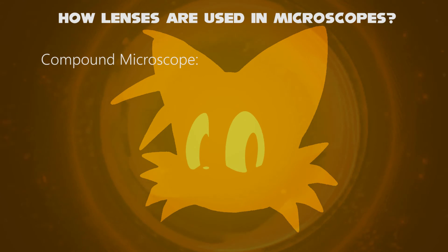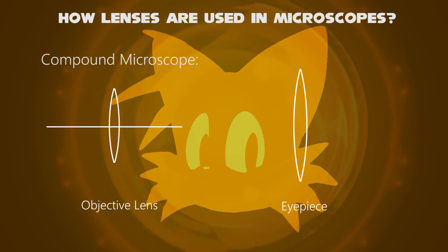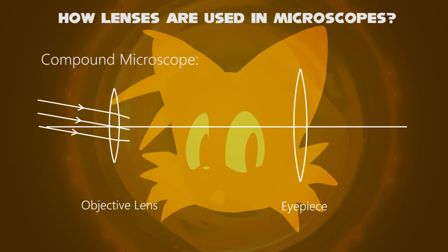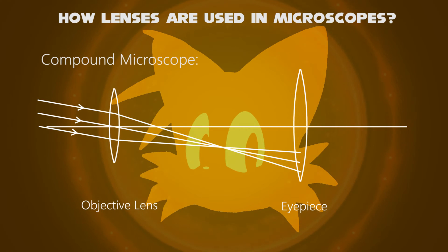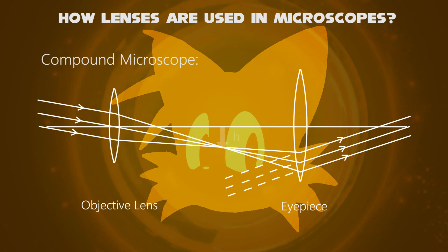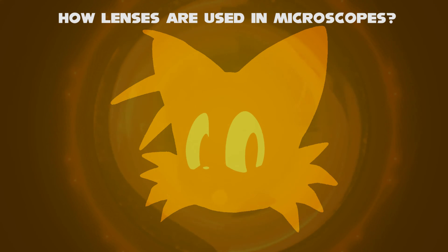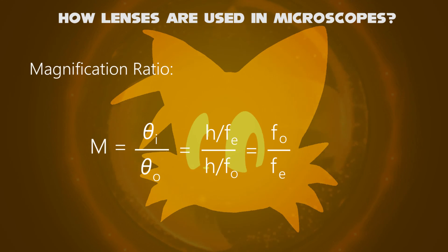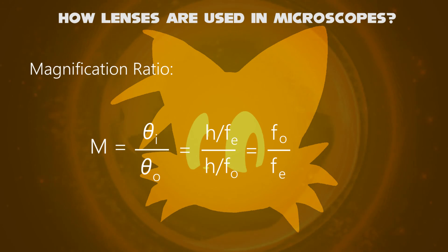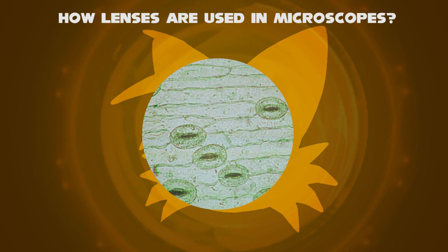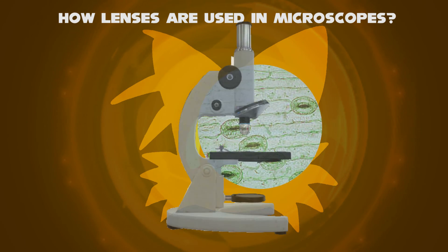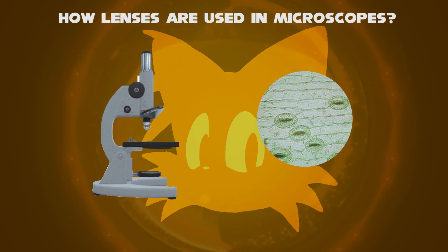For the compound microscope, two convex lenses are used — one for the objective and the other for the eyepiece — this is just the same as for telescopes. The magnification ratio is F of O divided by F of E, as we found out last time. These can be widely used in cell biology, as mentioned earlier.